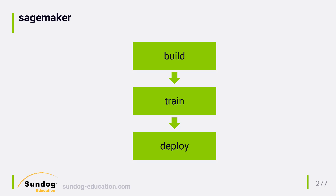And this training can be distributed. AWS will spin up as many machines as you want and train your model in parallel across them. This isn't free, of course — that computer time costs real money.